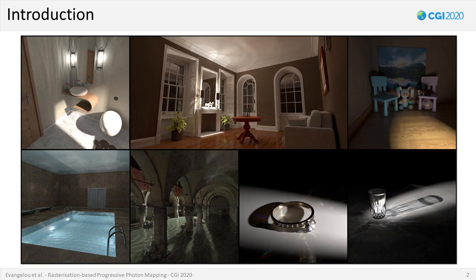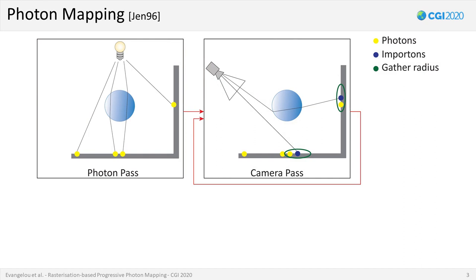Rendering high fidelity images is a challenging task when difficult to capture illumination events are present in the scene. One such case arises when we would like to simulate lighting phenomena such as caustics. To handle this type of events, algorithms that discover paths from the light sources to the camera sensor in a bidirectional manner, such as photon mapping and its several variants, have been introduced and extensively researched in computer graphics.